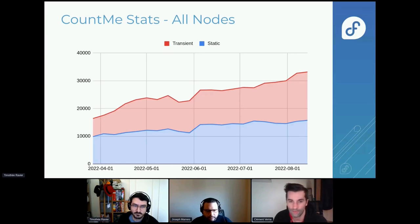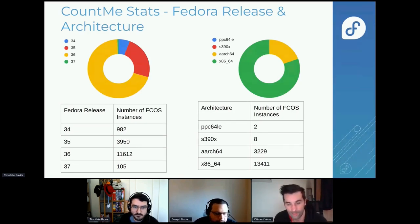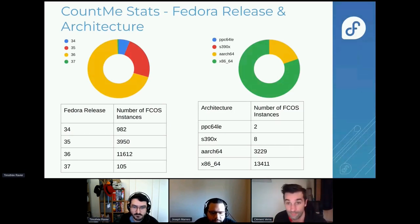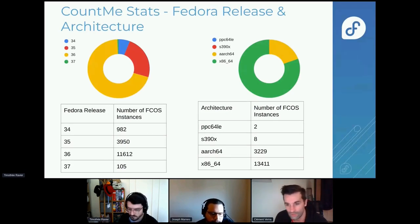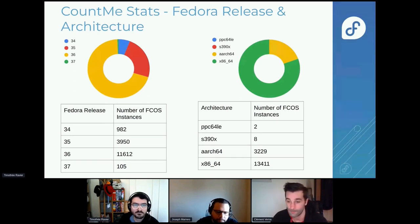All together we are at over 30,000 nodes. With the counting stats we can go deeper and understand how those nodes are spread. You can see the spread for Fedora releases and also for architectures among static nodes. We started to have support for s390x, and we have a couple of PowerPC nodes too — we'll see how this develops into the next year.